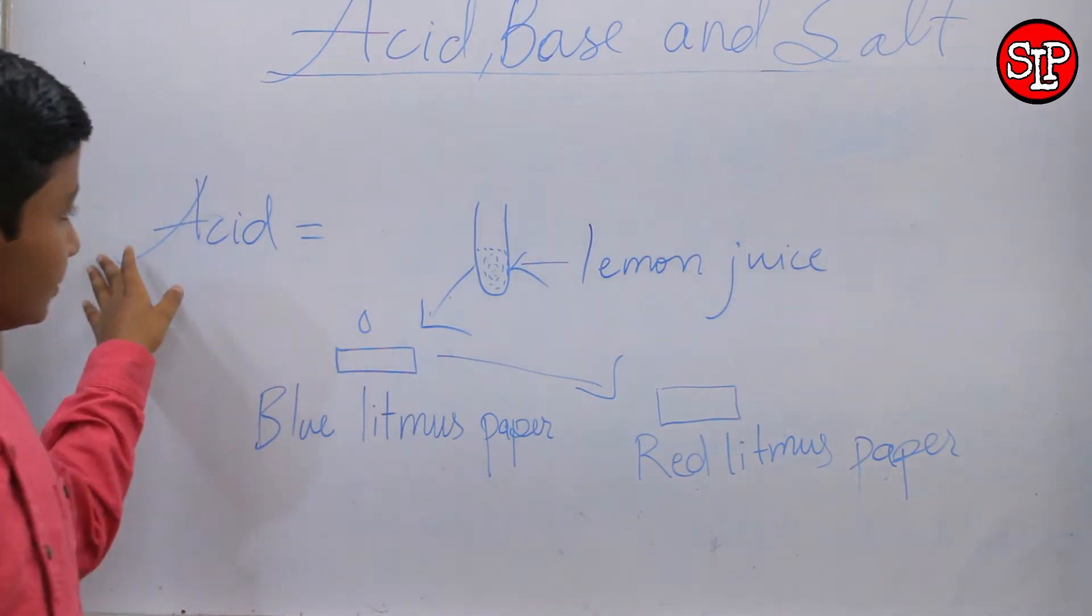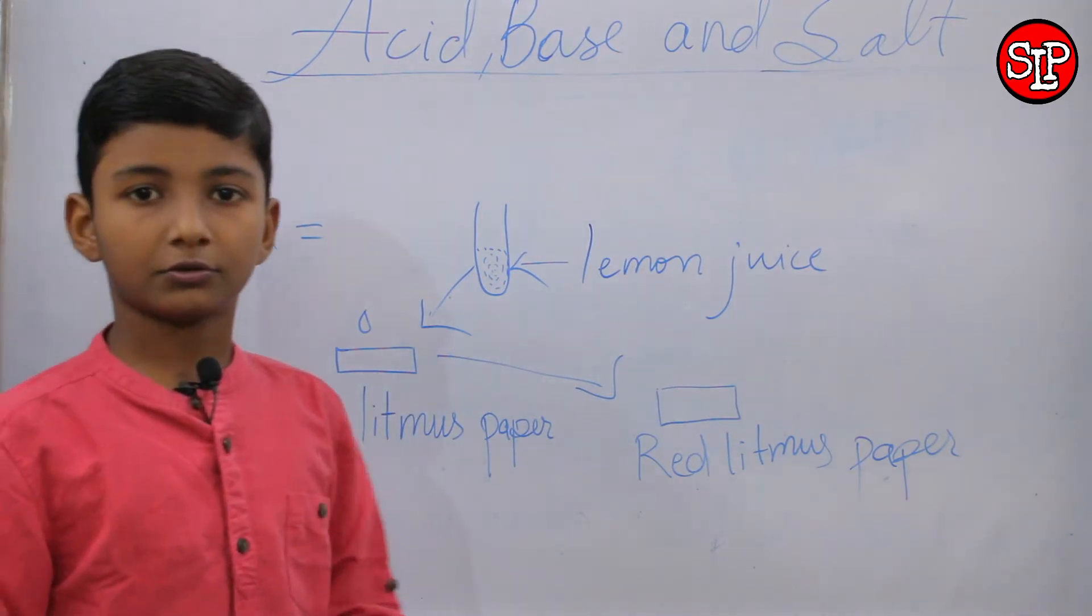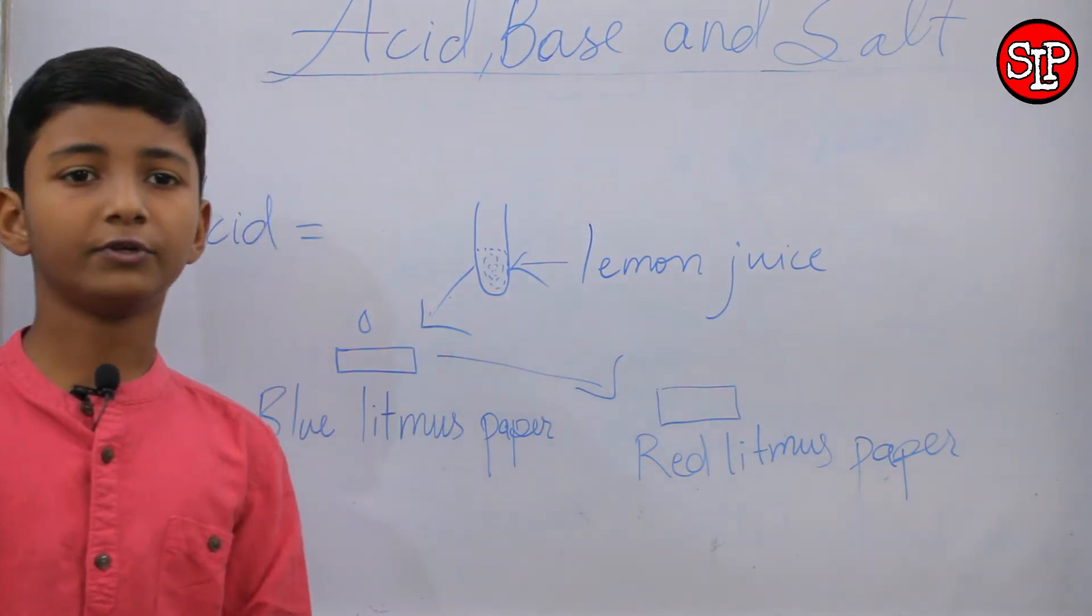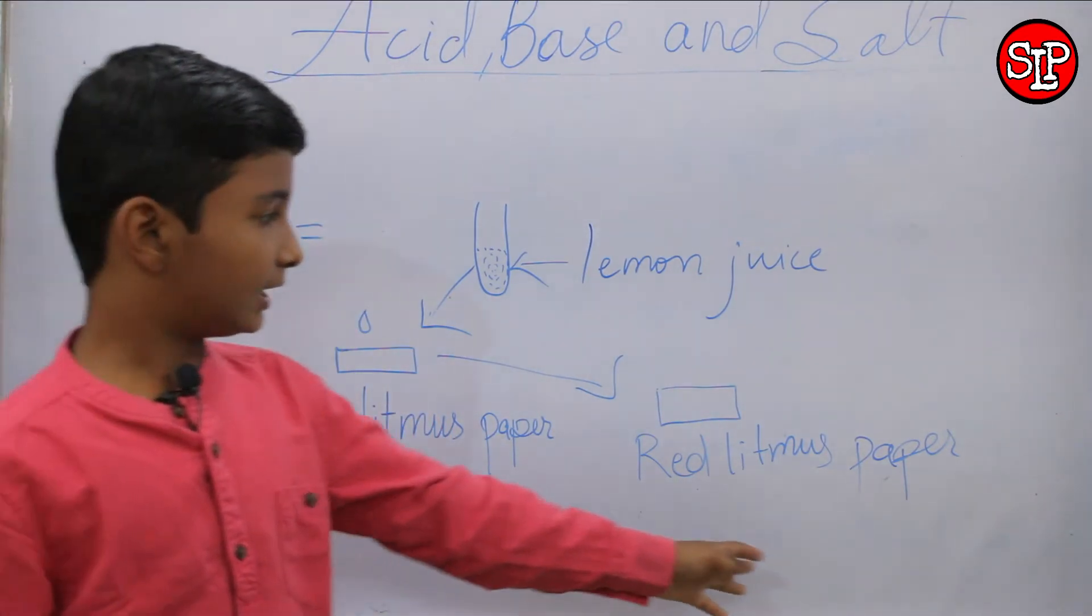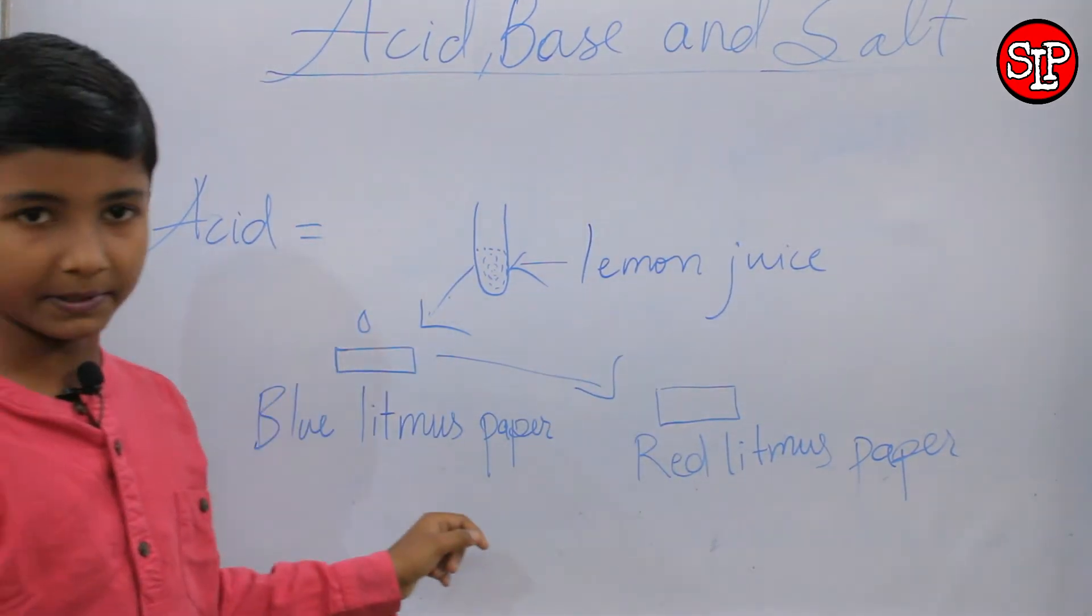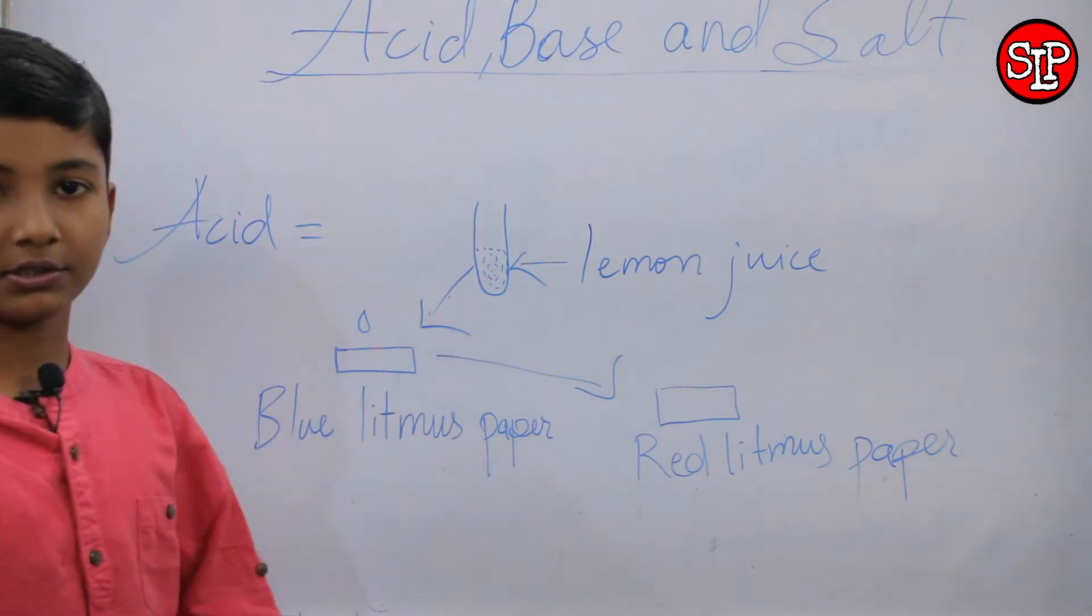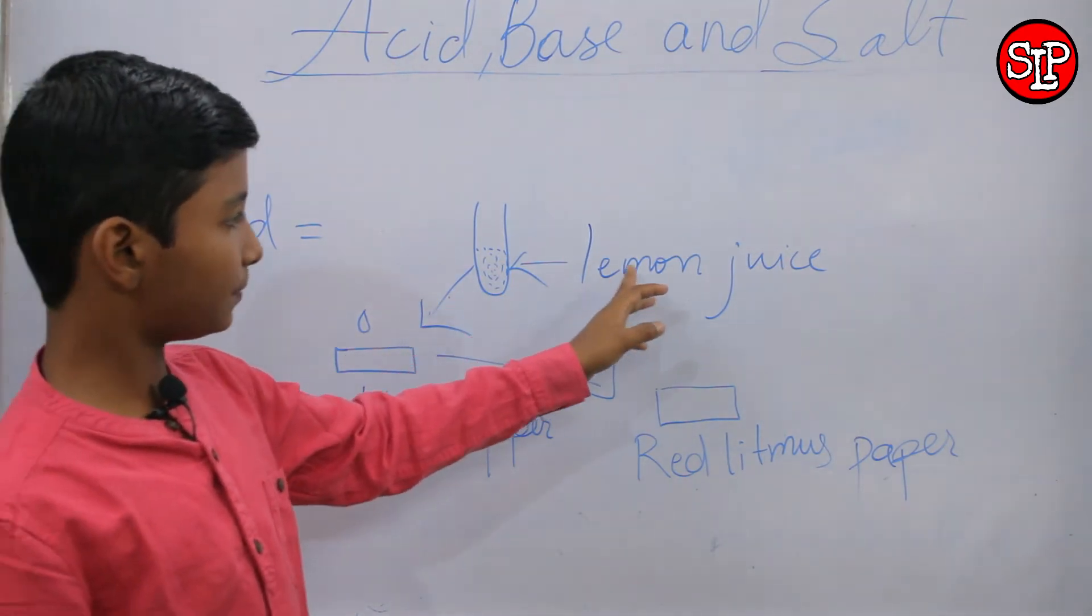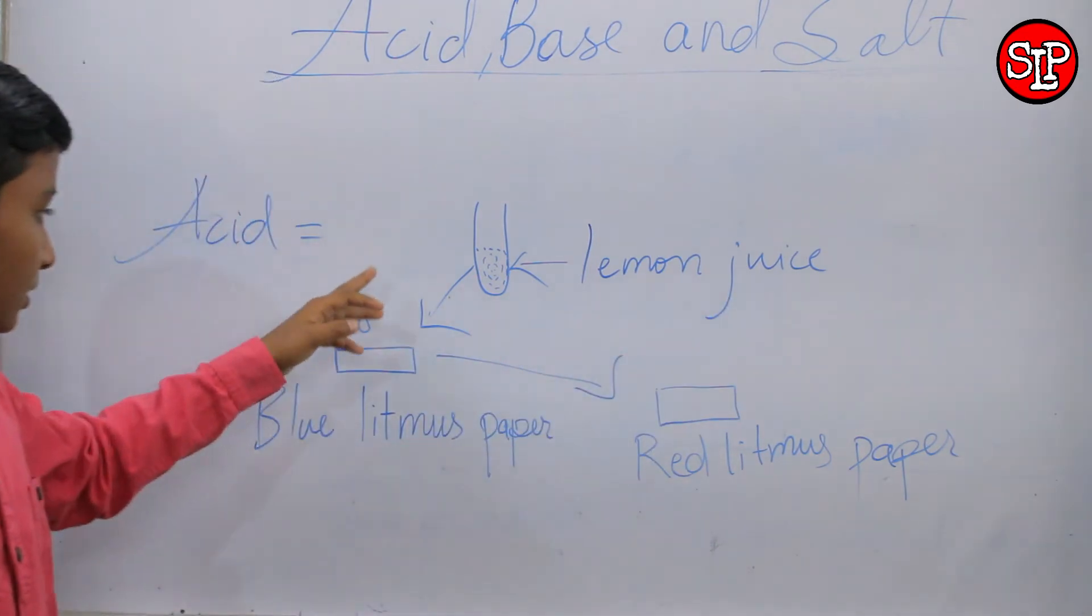So we will prove lemon juice is an acid. So let's begin. Test tube. Take a test tube and keep lemon juice in it and drop it by a dropper on blue litmus paper.